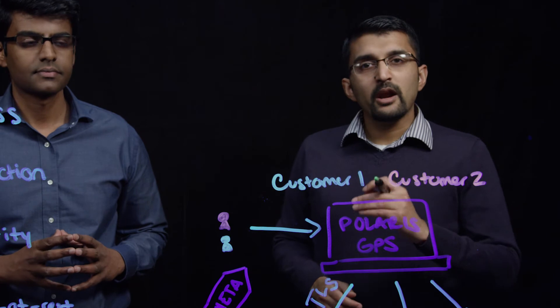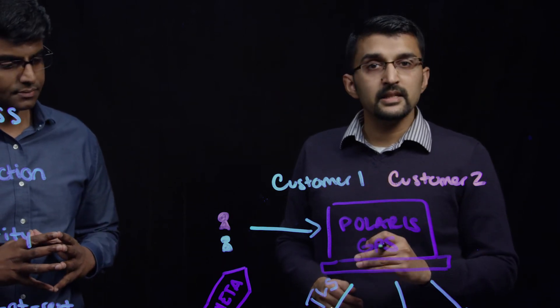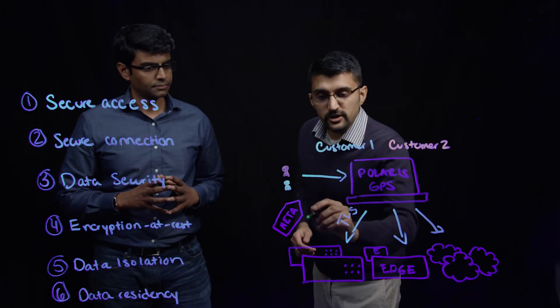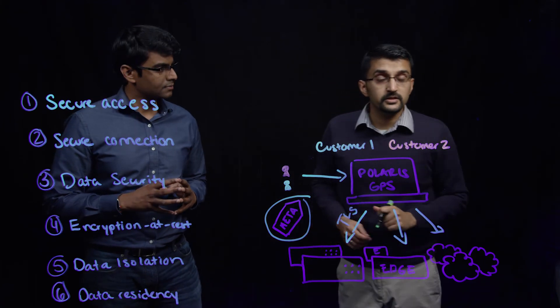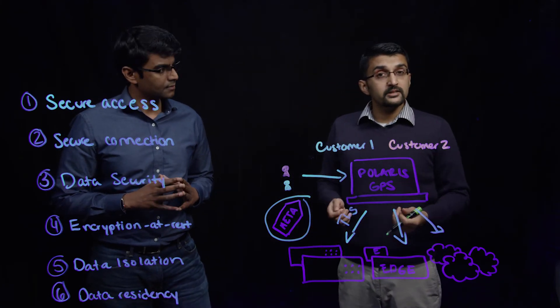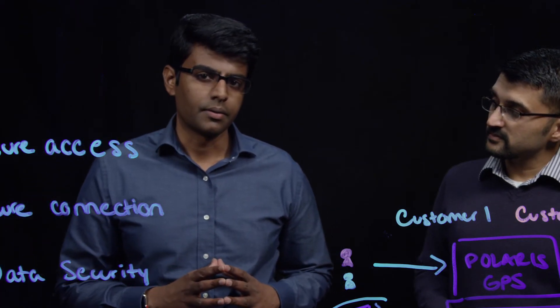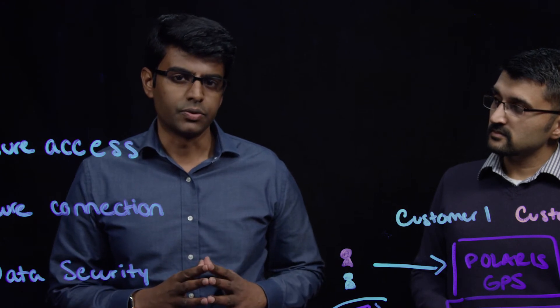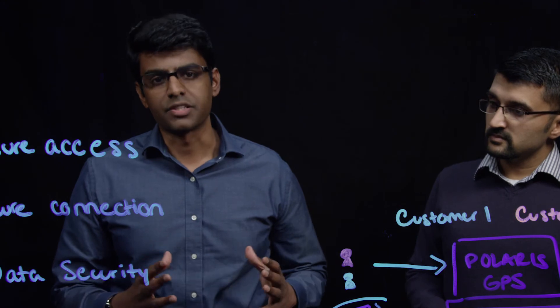For data security, Polaris GPS ensures that we do not have any access to the customer's core data or objects. Polaris GPS exclusively works with the metadata from the clusters such as object size, object type, location, and any timing information. This is very important because many enterprises may not want their data to leave their data center, allowing them to fulfill their compliance requirements.